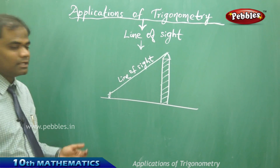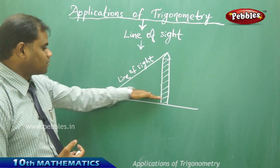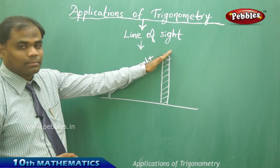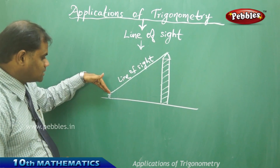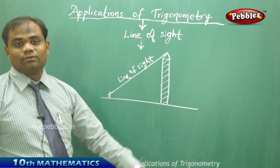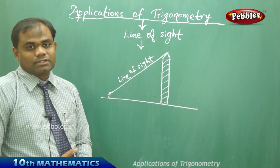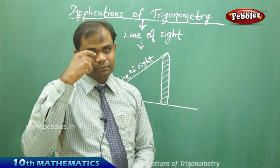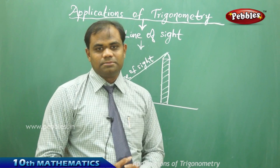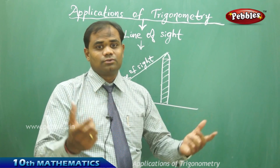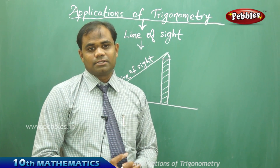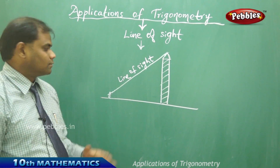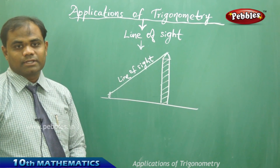The line of sight can be in any direction. If I look straight, this is the line of sight. If I look up, the line of sight is upward. If I look down, the line of sight is downward. Ultimately, the eye contact I make with the desired object — the distance between them — is called the line of sight, the line along the sight.